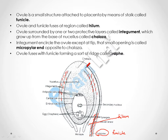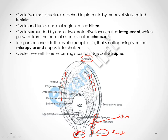The protective layer integument grows towards the upper side, and that upper side of the ovule is called the chalaza. The lower side, having a small opening, is called the micropylar end. Where the ovule fuses with the funicle, forming a sort of ridge, that ridge is called the raphe.